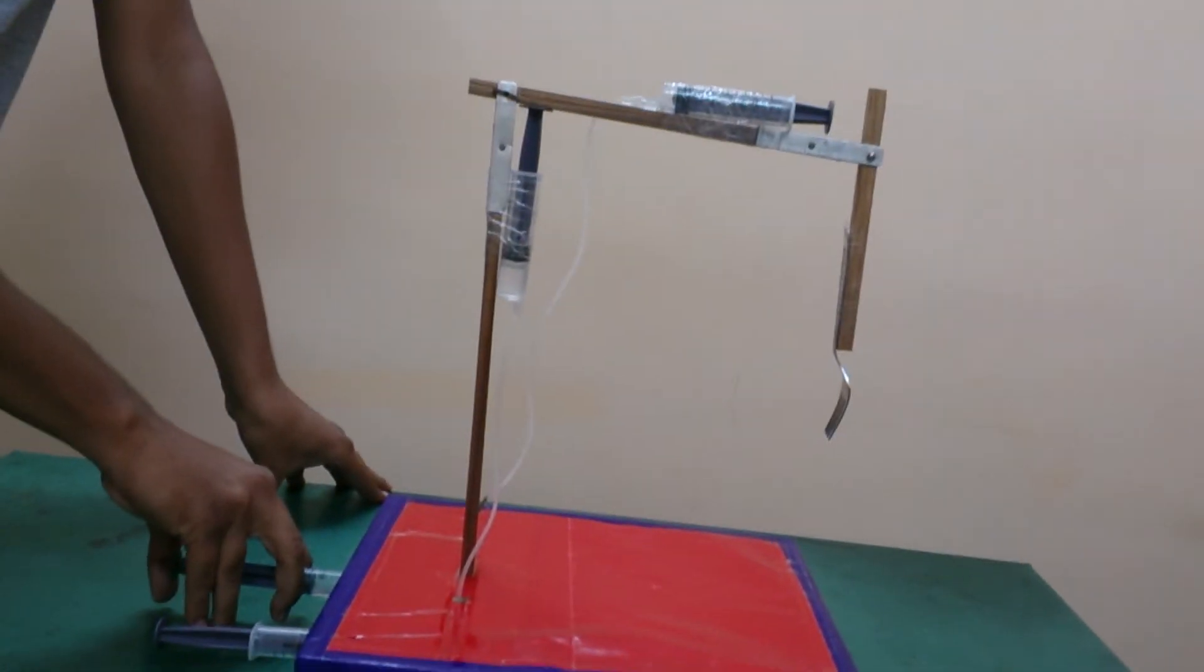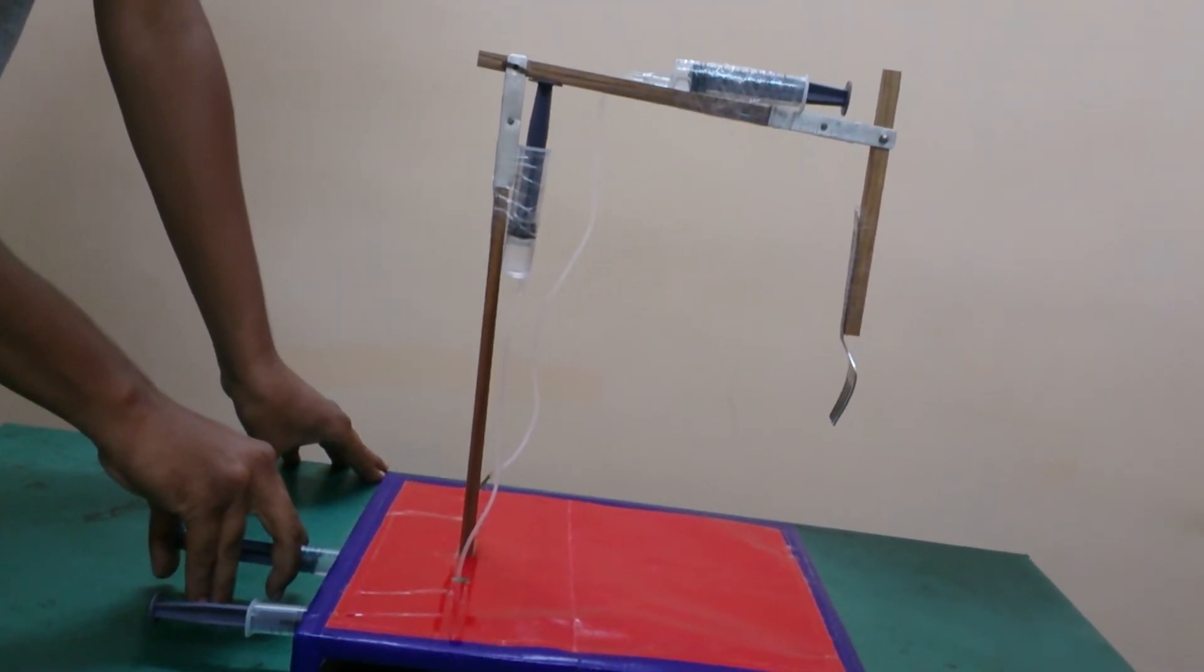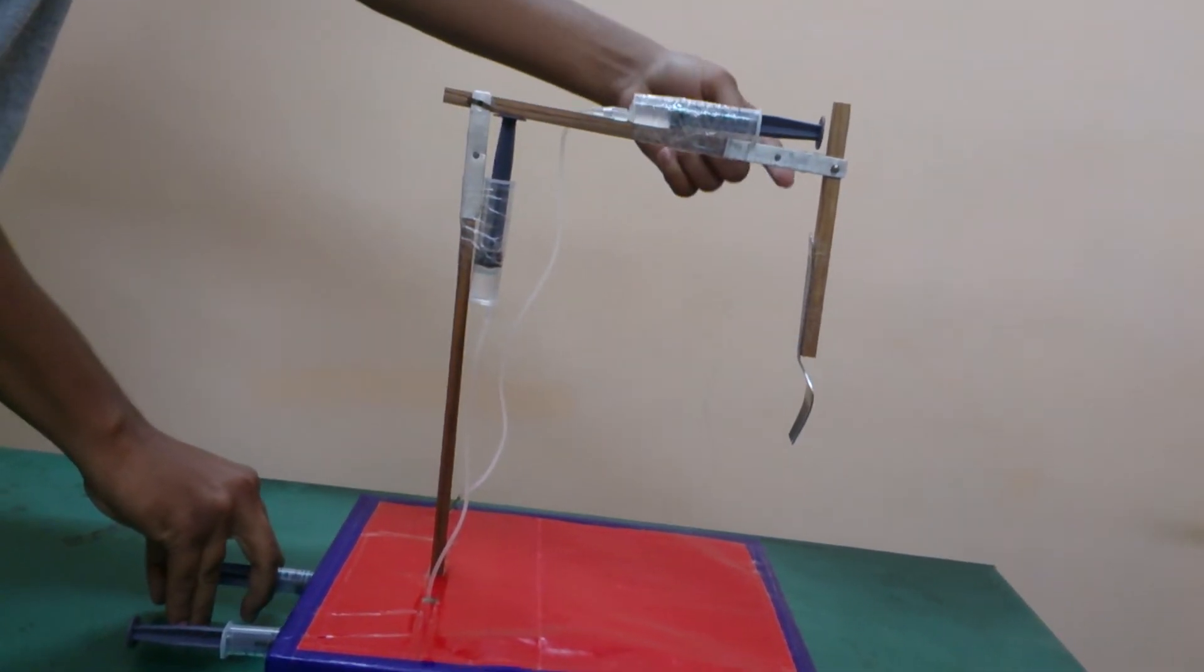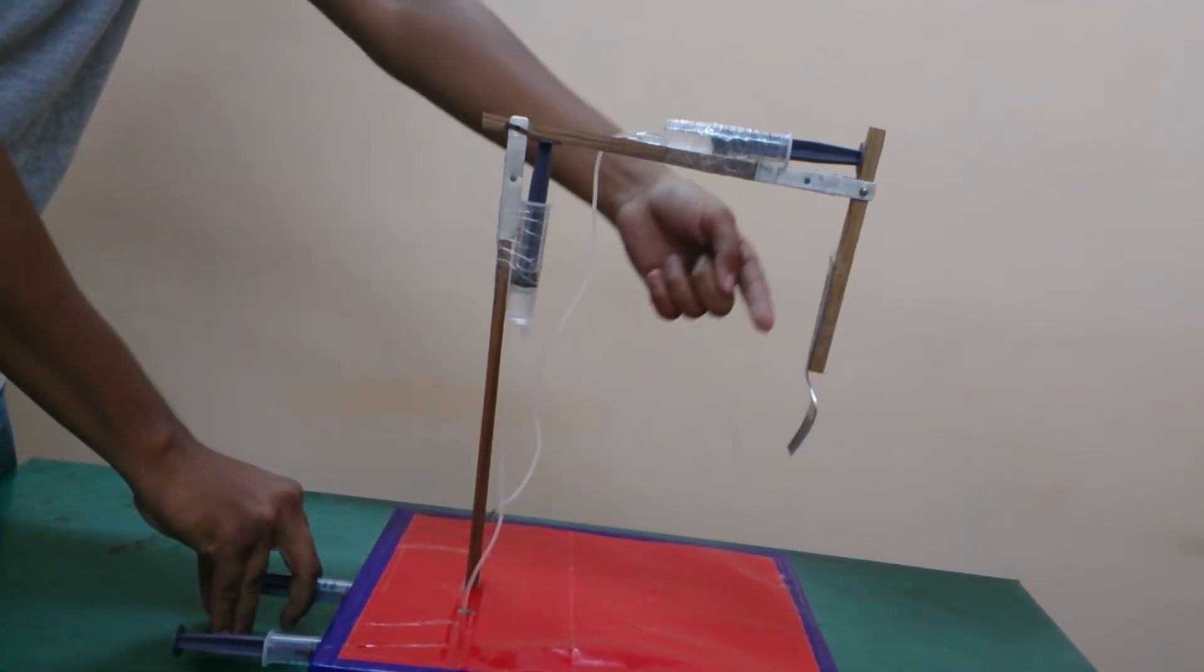When I apply pressure in this syringe, again the pressure will be transmitted through the liquid and it moves the link which is holding the arm.